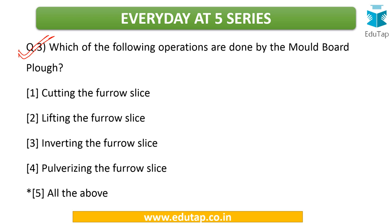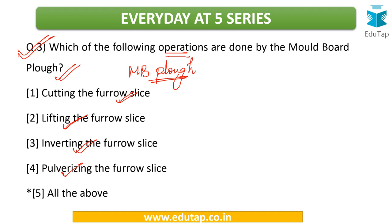The third question: which of the following operations are done by the mold board plow — famously called the MB plow? The options are: cutting the furrow slice, lifting the furrow slice, inverting the furrow slice, and pulverizing the furrow slice. It is like a step-by-step process — cutting, lifting, inverting, pulverizing. The answer is all of the above; all these steps are performed by the MB plow.